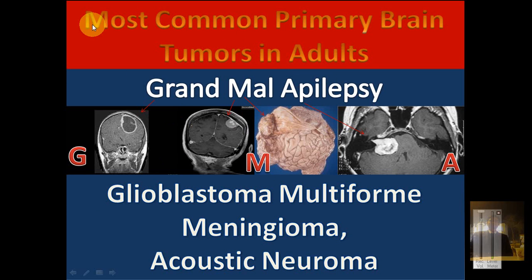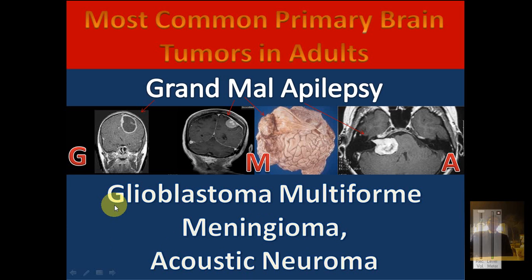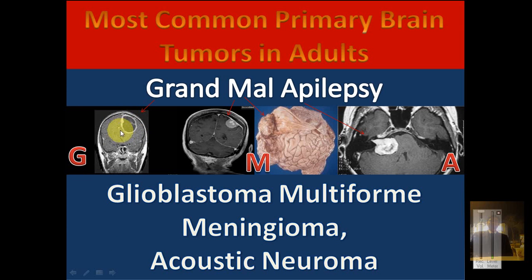Let's begin with the most common primary brain tumors in adults. The three most commonly tested are glioblastoma multiforme, meningioma, and acoustic neuroma. Glioblastoma multiforme is the most common primary brain tumor in adults and has a very poor prognosis. It is commonly found in one of the cerebral hemispheres, usually in the frontal, temporal, or parietal lobes.